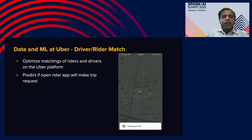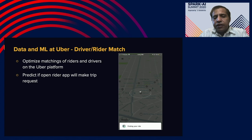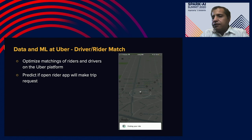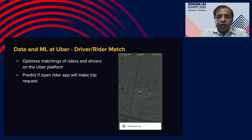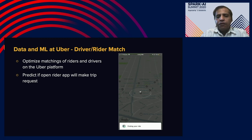The next use case is driver-rider matching. Once you open the app and click for a ride, there is a demand and a supply. At runtime, machine learning models predict which cars are nearby you and then match between rider and driver. That's all driven by ML and data platforms, and is a very important use case for Uber.